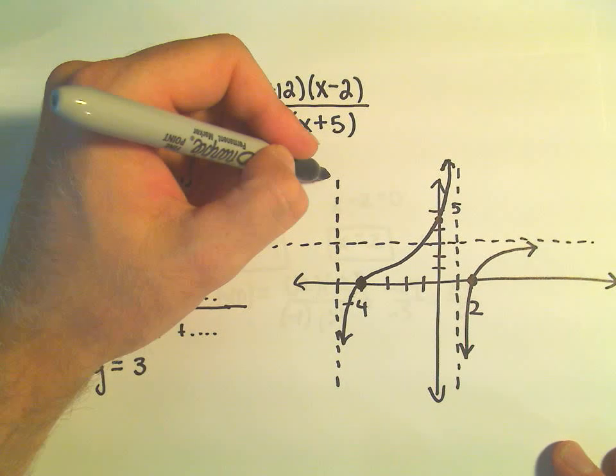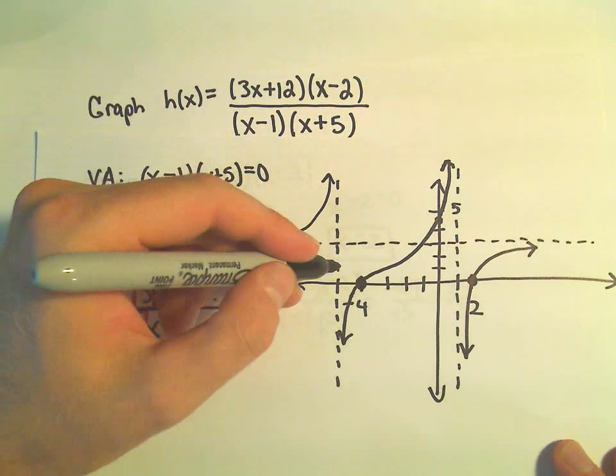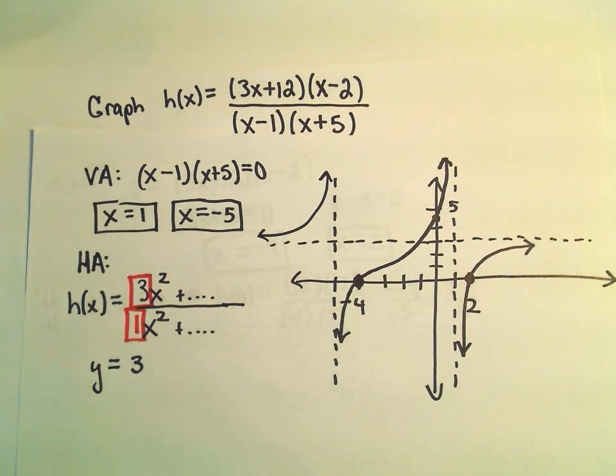So that tells me the graph really would kind of be forced to be sort of in the top left corner with respect to those asymptotes. So actually, without plotting many points at all, we've got, I think we've got a decent little graph.